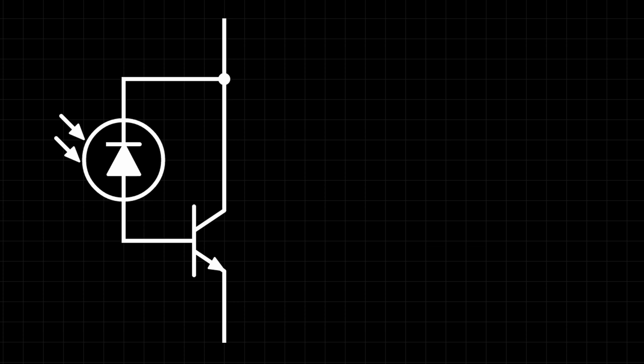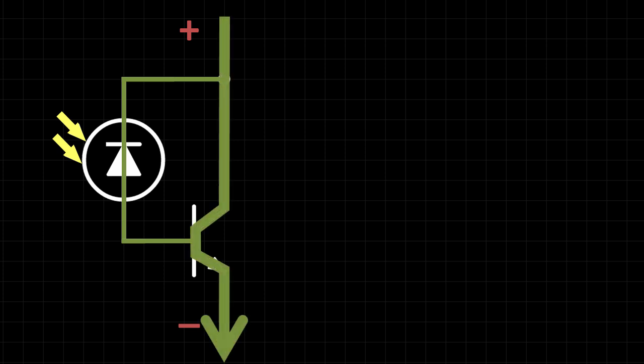We can do this by attaching the LED to the base of a transistor, as shown here. If a voltage is applied to the circuit and the LED is not illuminated, no current will flow through the transistor. When the LED is illuminated, a small current will pass through the base of the transistor. This will cause the transistor to become conductive and a much larger current will pass from the collector to the emitter.